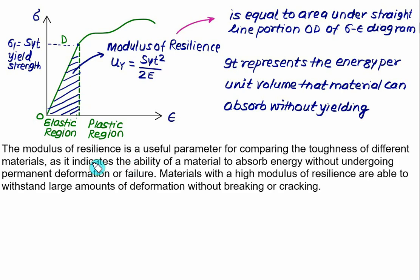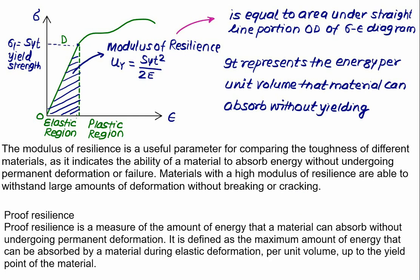The modulus of resilience is a useful parameter for comparing materials, as it indicates the ability to absorb energy without permanent deformation or failure. Materials with high modulus of resilience can withstand large deformation without breaking. Proof resilience is essentially the same as modulus of resilience — it is defined as the maximum energy that can be absorbed by a material during elastic deformation for its entire volume up to the yield point.